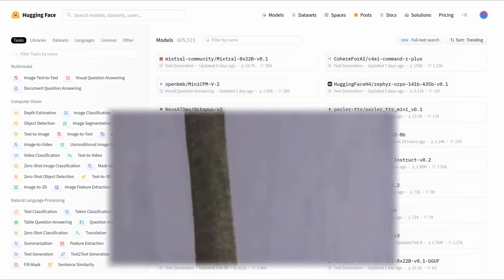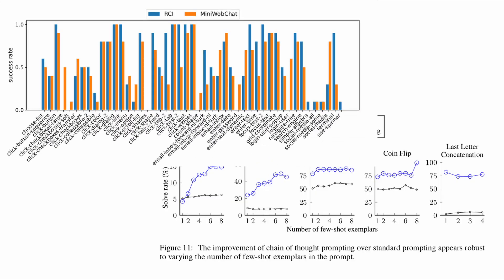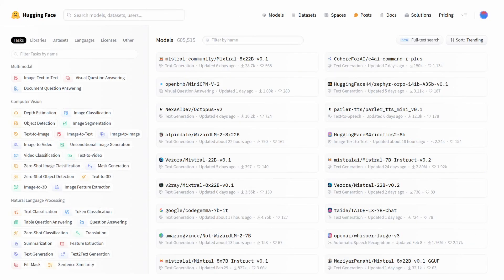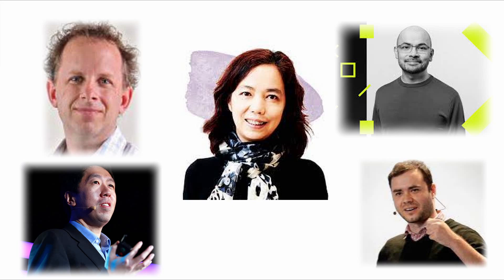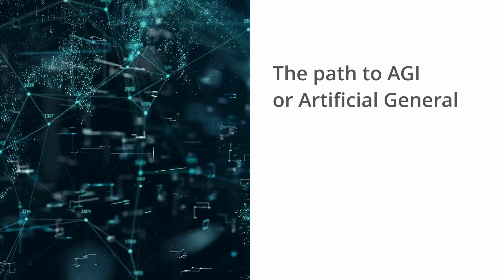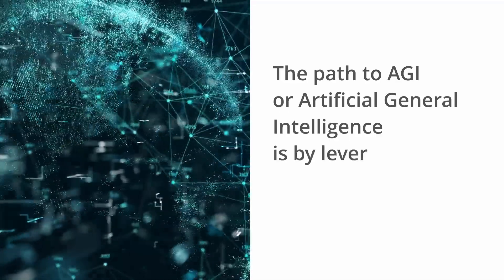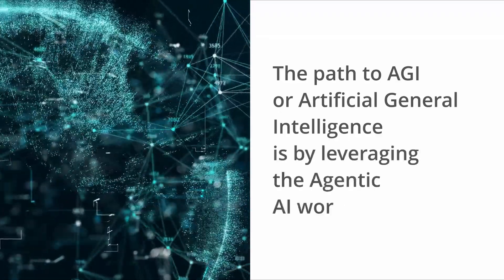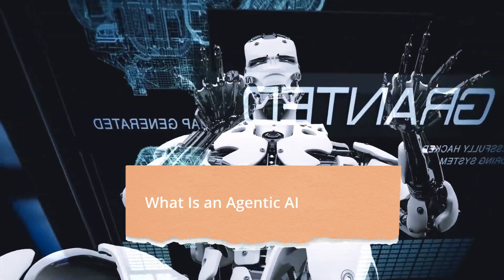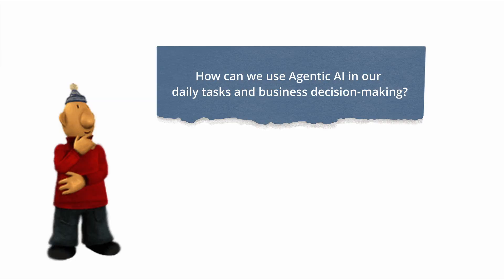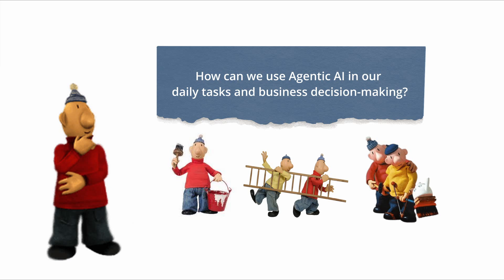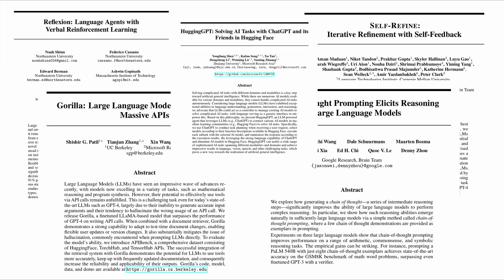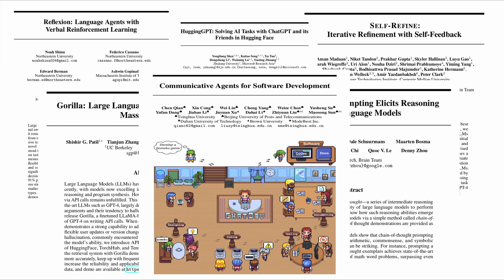What if I told you that you've been using AI the wrong way, and that there is a much better, optimized way to get the best out of even a simple generative model? Researchers in artificial intelligence believe that the path to AGI, or artificial general intelligence, is by leveraging the agentic AI workflow. But what exactly is an agentic AI workflow, and how can we use it in our daily tasks and business decision-making? To find out, we will go through several important concepts in very recent AI developments using examples from prominent research studies.